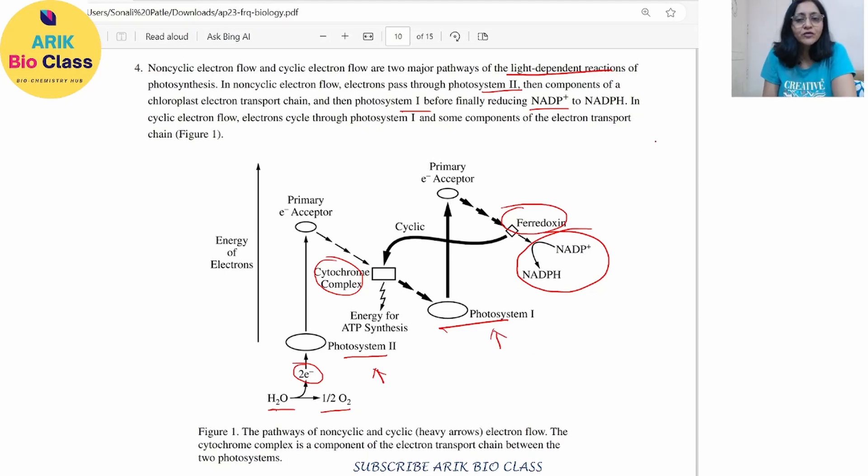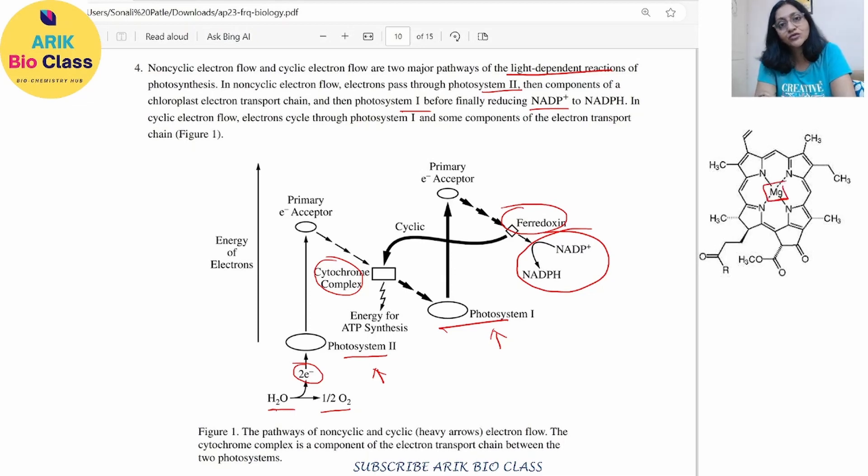Now we know that in chlorophyll, we have the structure of chlorophyll. So it has a central atom of magnesium, absorbs the light, it releases the electrons which travel through the non-cyclic, cyclic pathways. And with the release of electrons,